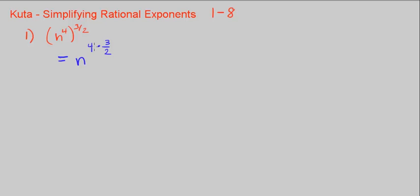We multiply 4 times 3 over 2. 4 is over 1, so this is n — 4 times 3 is 12, and 1 times 2 is 2. Simplifying, we get n to the 6th power, since 12 divided by 2 is 6.